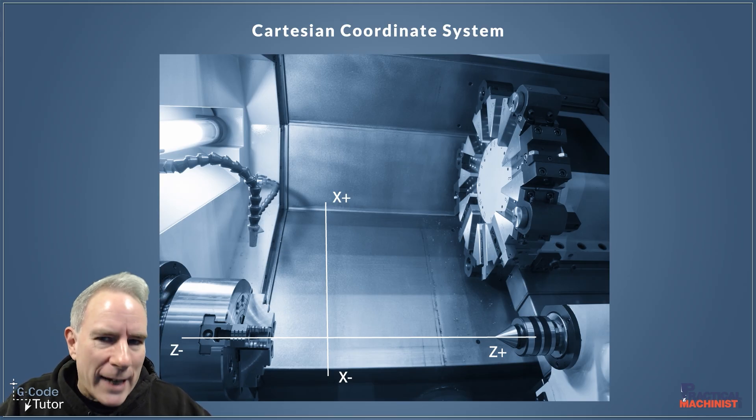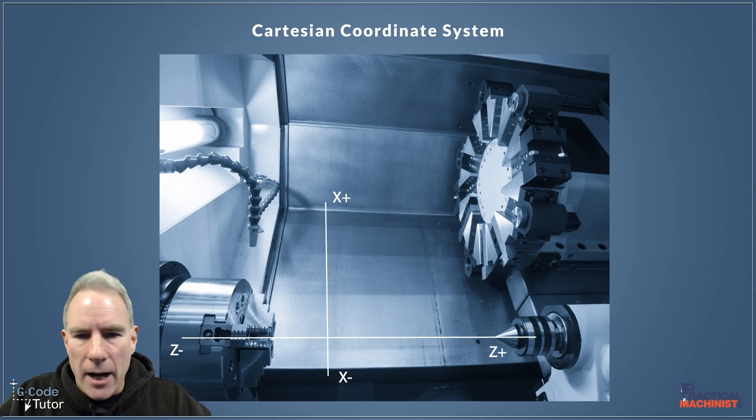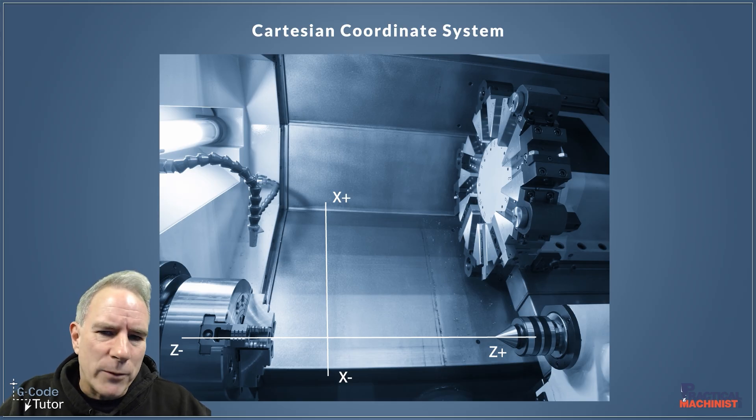Now you might find the Y-axis on some lathes which push the turret towards the viewer here on this slide and the back. It's great for milling flats, things like that very quickly. We can program G-code very quickly to machine flats on a bolt with a Y-axis there.